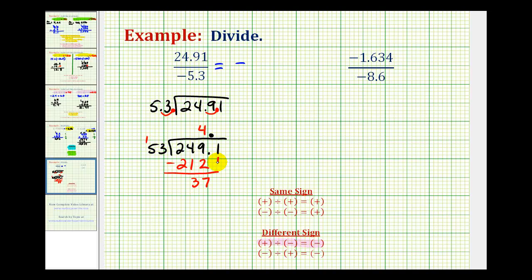Bring down the next digit, which is a 1. Now we want to know how many 53's there are in 371. Again, that's not an easy question, but if I think of this as 50, I know 50 times 7 is 350, so that's close. Let's try 7. 7 times 3 is 21. Now we're going to carry a 2, and this looks good. 7 times 5 is 35, plus 2, that's 37, and this difference is 0, so we're done.